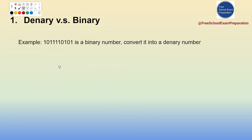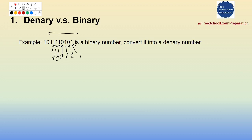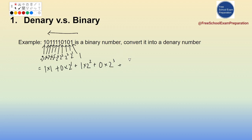Let's do another example — a 10-bit binary number. Again, we go from right to left: 1×1, 0×2, 1×4, 0×8, 1×16, 1×32, 1×64, 1×128, 0×256, and 1×512. You sum all these values. The method is straightforward — identify which bit positions are 1, take the corresponding powers of 2, and add them together.